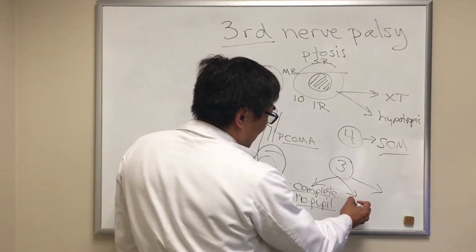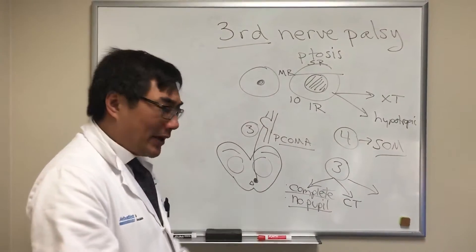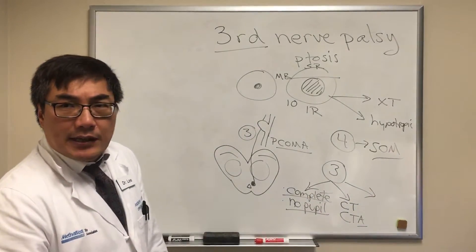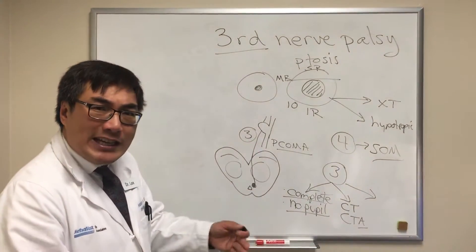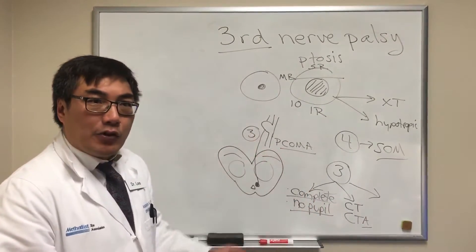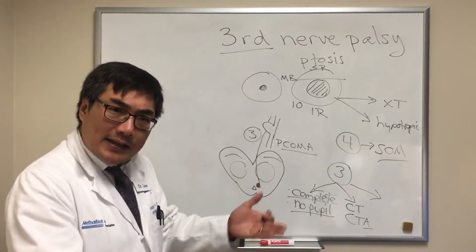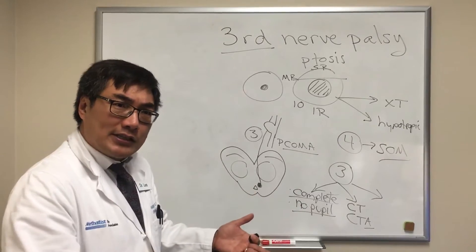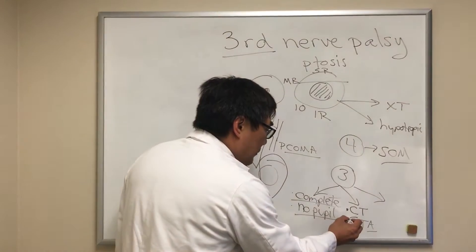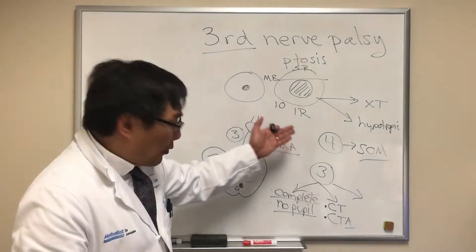Our first imaging study is a non-contrast CT scan to look for subarachnoid hemorrhage if we're worried about aneurysm. In most places, a CTA is the imaging study of choice when looking for aneurysm — you need an angiogram of some kind to find an aneurysm. Different types include CTA, MRA, and DSA (digital subtraction angiography), but in the emergency room a non-contrast CT followed by a contrast CTA of the head is usually our go-to.